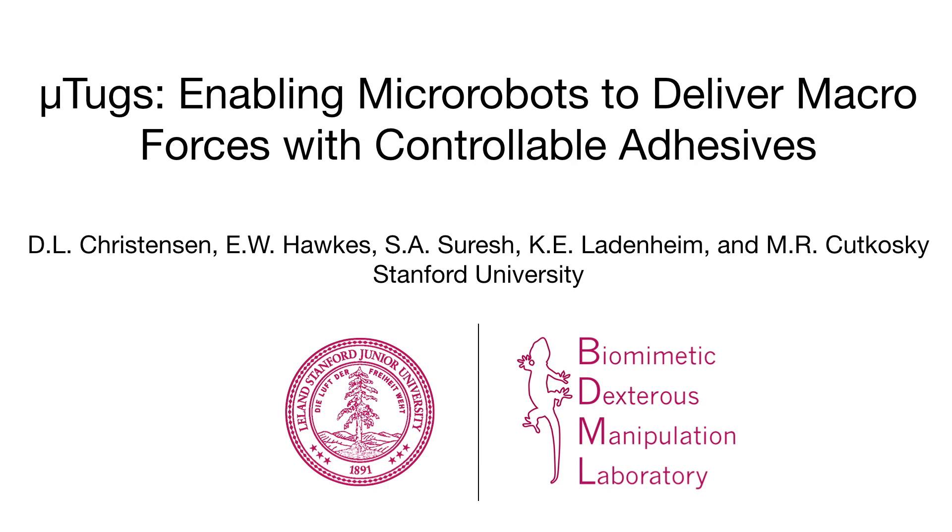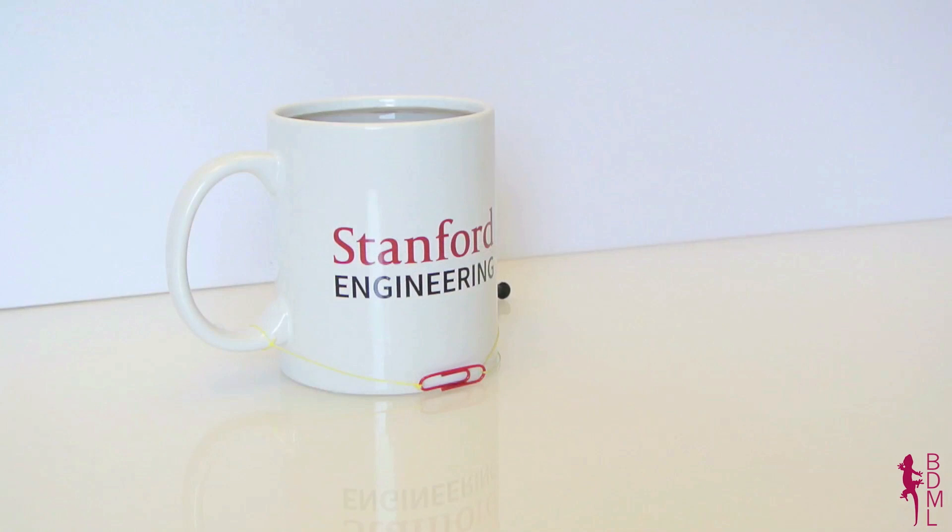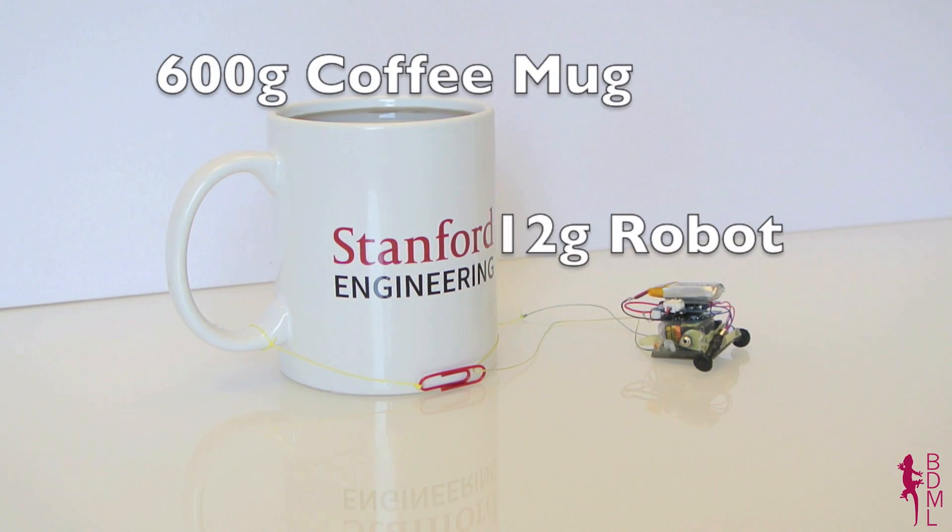Stanford's BDML presents Micro Tugs, micro robots with macro forces. This full coffee mug has a mass of 600 grams, or 50 times that of the 12 gram robot hiding behind it.